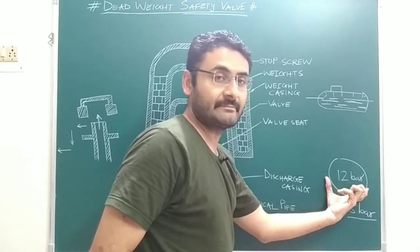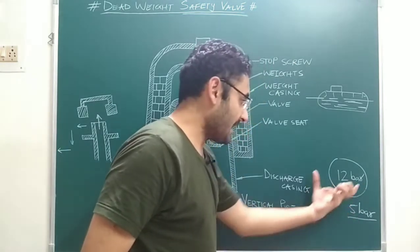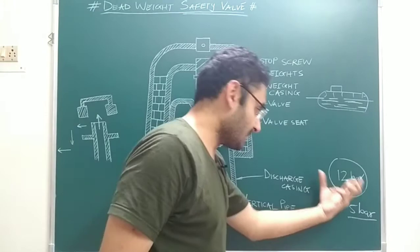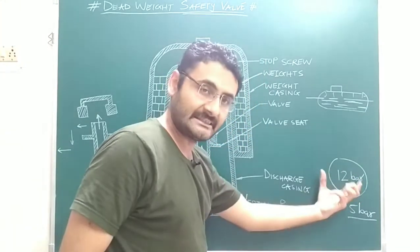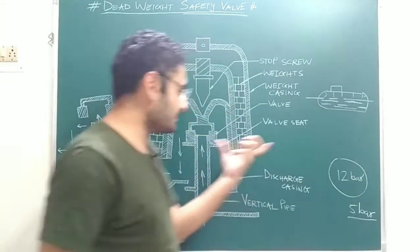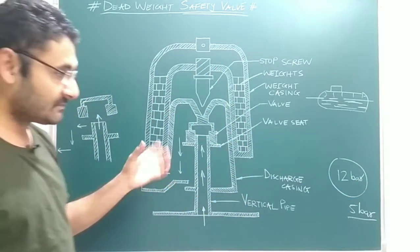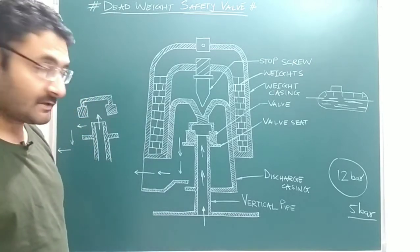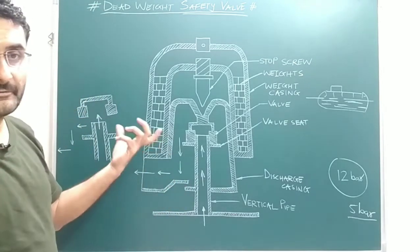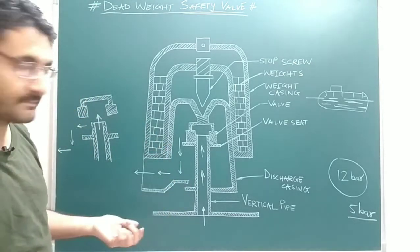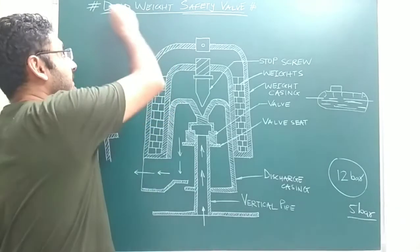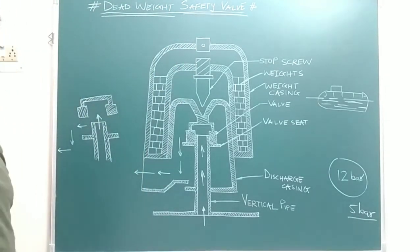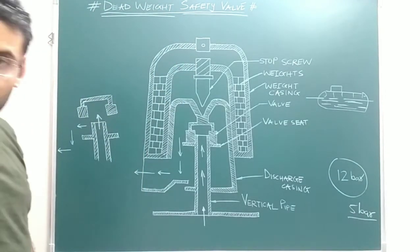When pressure increases beyond the working pressure, there is a chance the boiler may blast or an accident may take place. To avoid the blast or accident, this type of valve is used, which provides safety to the boiler with the help of a dead weight. The question is: how does that weight provide safety to the boiler?